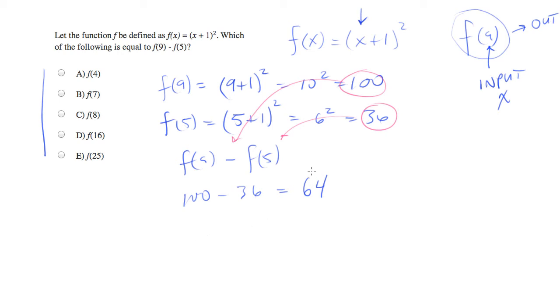Instead of plugging in for x, I'm just going to plug 64 in for f. So let me put 64 over here, because now 64 is actually the output. So 64 should equal x plus 1 squared. I'm going to take the square root of both sides.